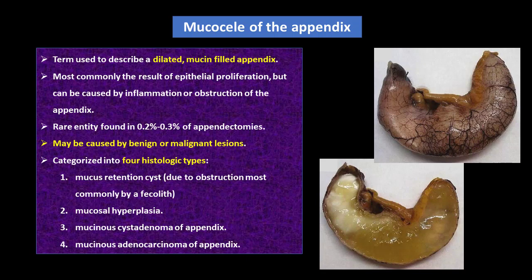Mucocele of the appendix is a rare entity, found in 0.2% to 0.3% of appendectomies. It may be caused by either benign or malignant lesions, and is categorized into four histologic types: Number 1 is mucous retention cyst due to obstruction, most commonly by a fecalith. Number 2 is mucosal hyperplasia. Number 3 is mucinous cystadenoma of the appendix. And number 4 is mucinous adenocarcinoma of the appendix.